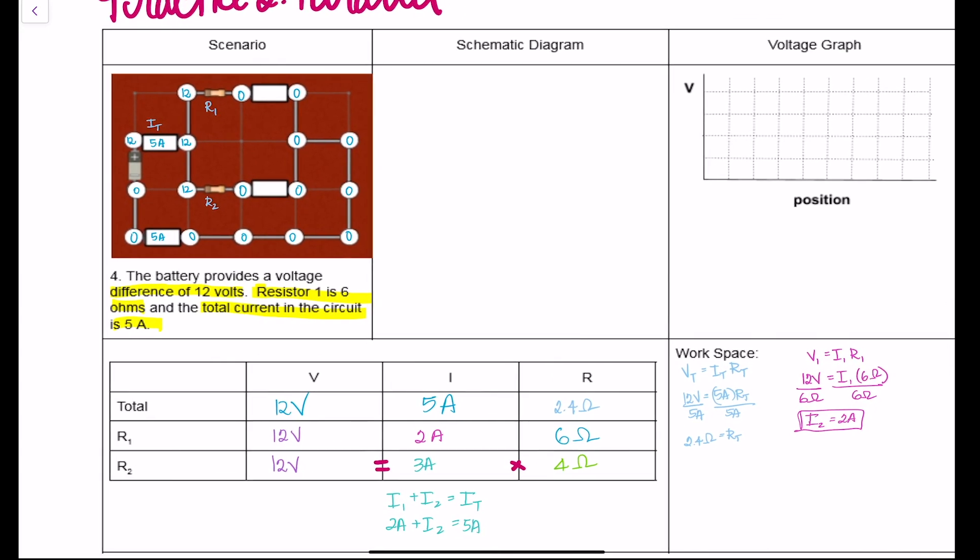Now to draw our schematic, we're going to draw our battery, and then going to draw our ammeter, and it splits off into two branches at this point. And we have resistor 1 with our ammeter here, and resistor 2 with our ammeter over here, and they come back together, and then they go all the way around to this ammeter at this point, and we're done.